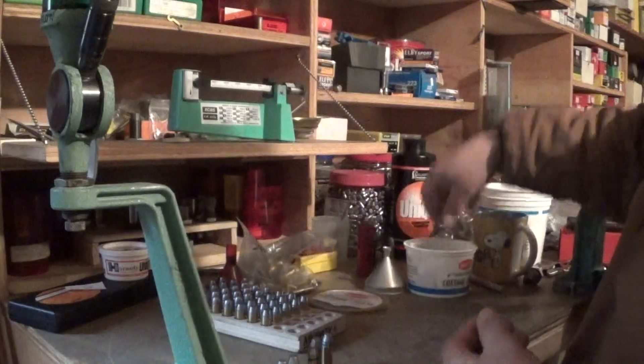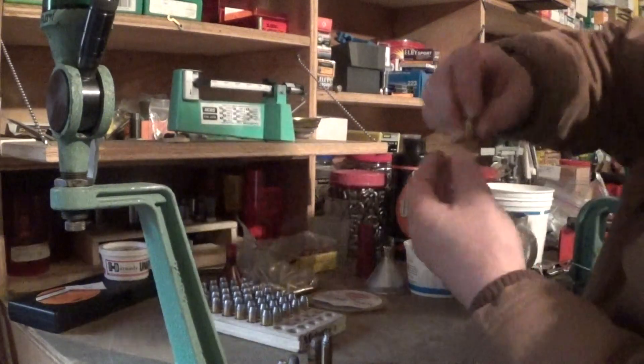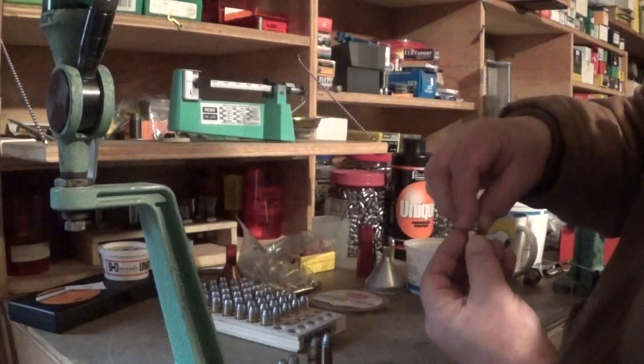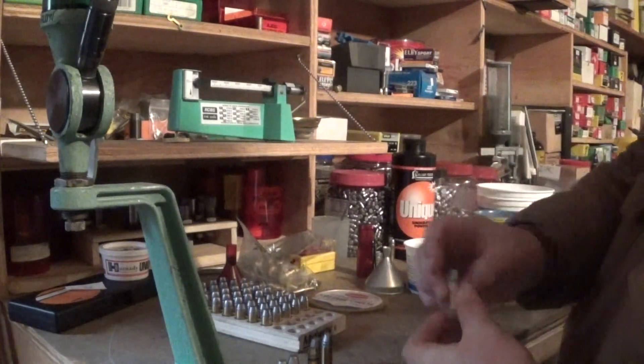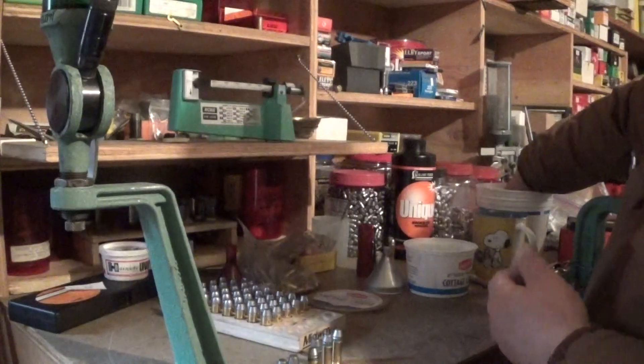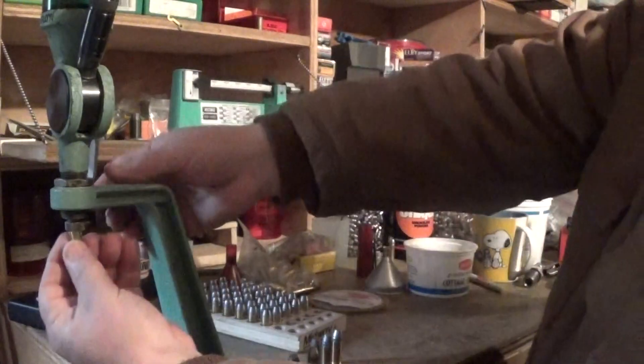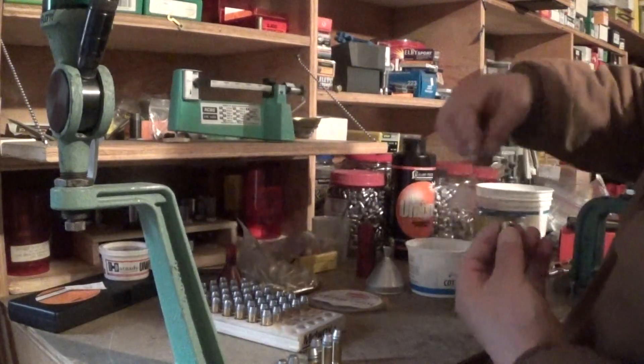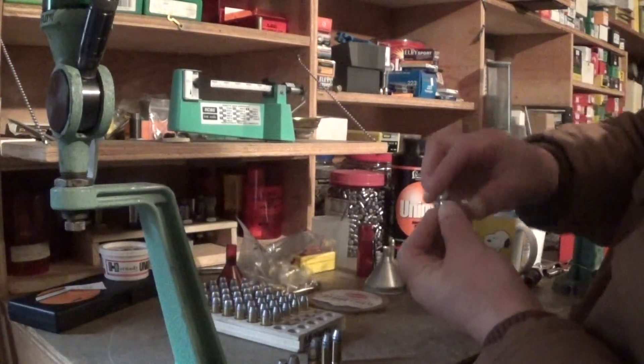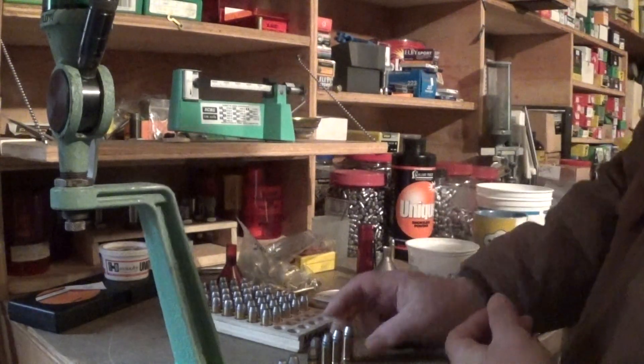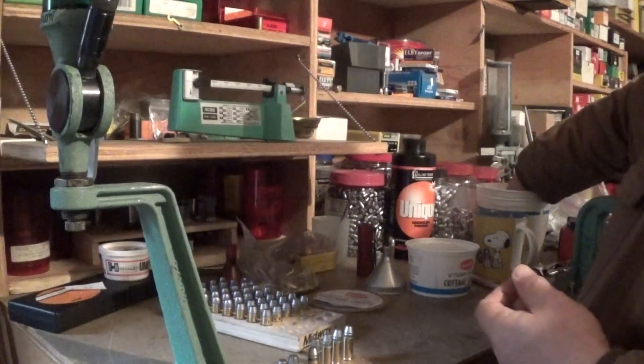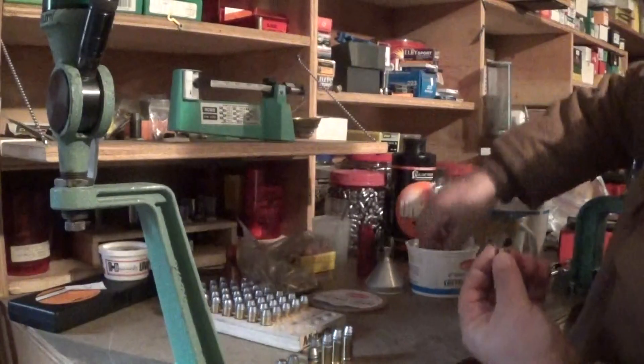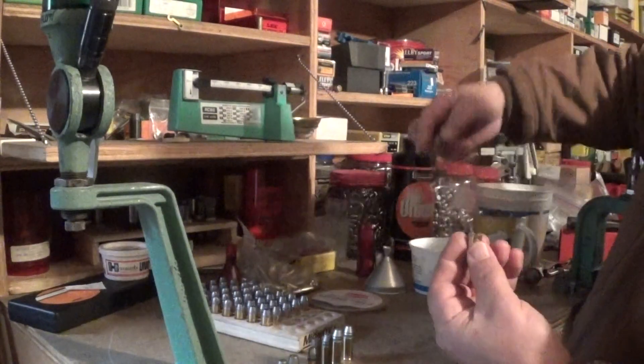So what I'm going to do is I'm going to load up 15 rounds of these and we'll give these a try against the Frontier bullet. Also what I want to do is I want to use 4.5 grains of bullseye with a keith bullet and see how that works as well with 44 Russian.